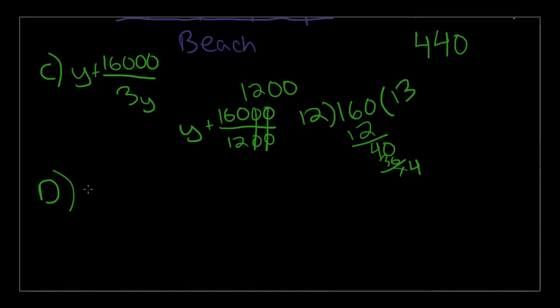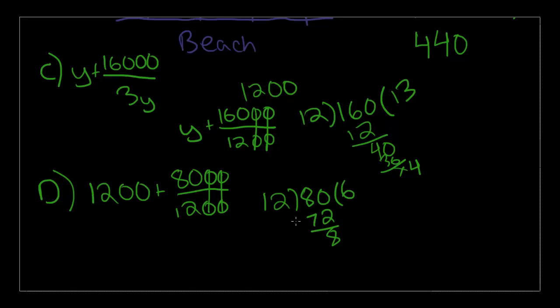Which is 3Y plus 8,000 over 3Y. We already know what 3Y is. It's 1,200. 1,200 plus 8,000 over 1,200. We can cross off two sets of zeros here. 80 divided by 12 should be 6 point something. 1,200 plus 6 is not anywhere close to that. So now let's go back and try choice B.